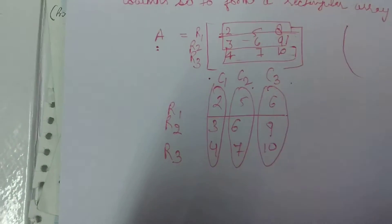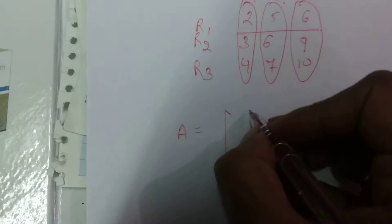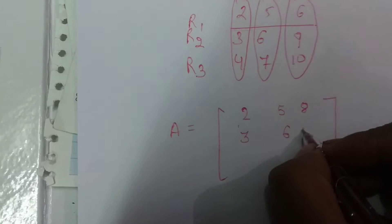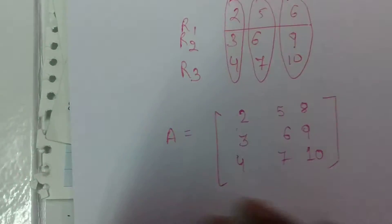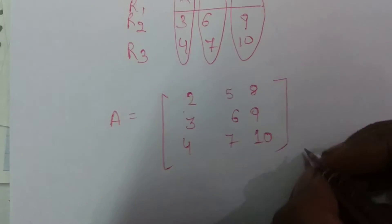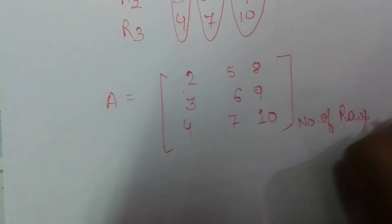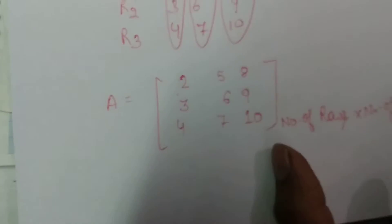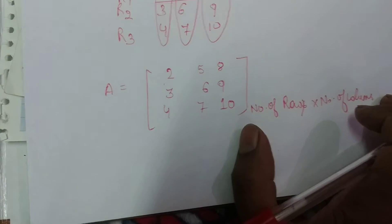Now we have to tell the order of this matrix. You can say order as well as dimensions. This is my matrix A and I have to give its order. First, we count the number of rows, then we count the number of columns — and this is our order. We never multiply for order; we just count them and write them.